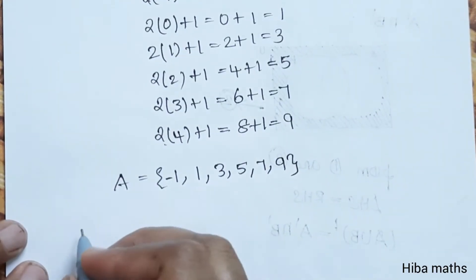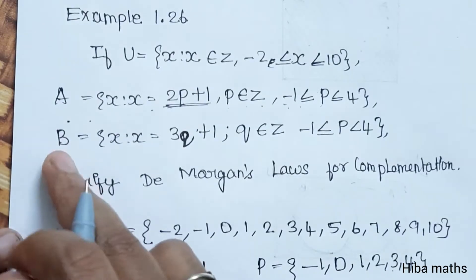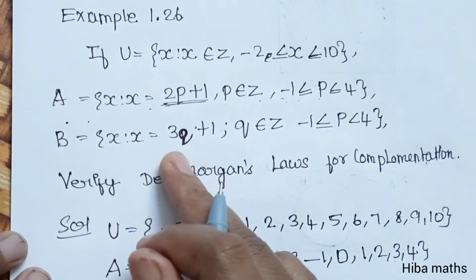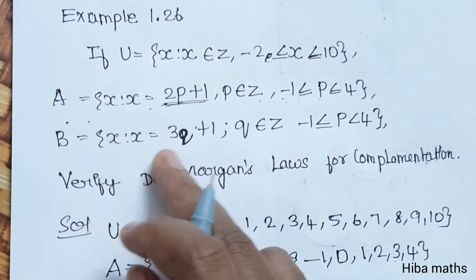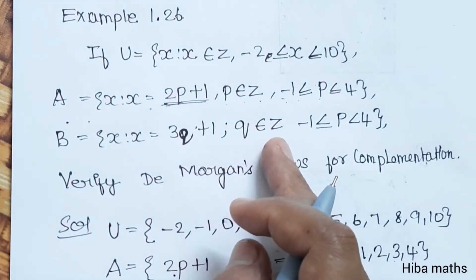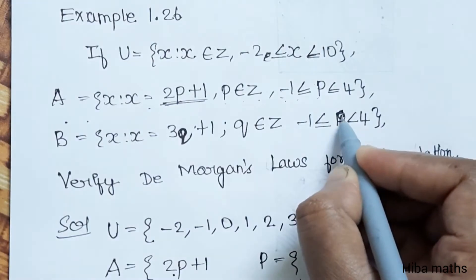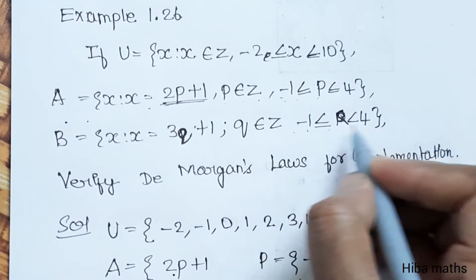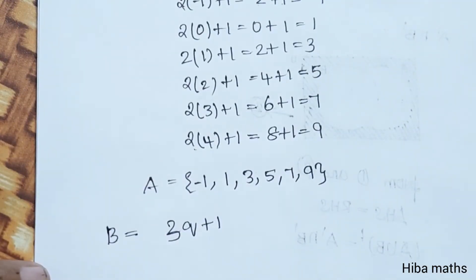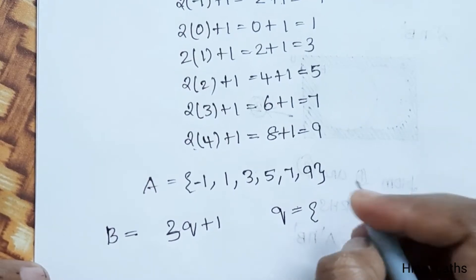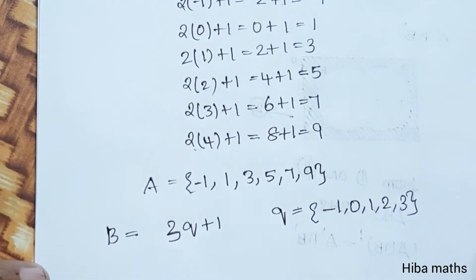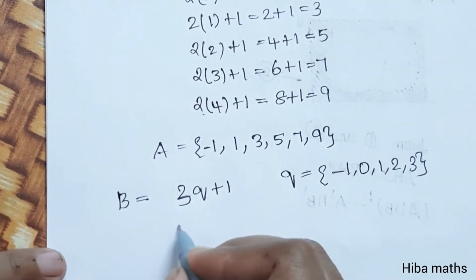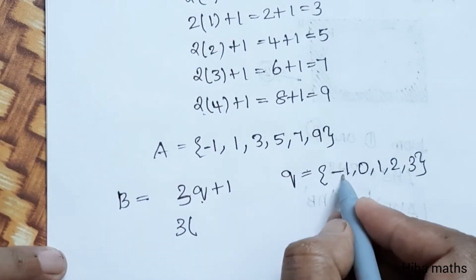This value is B. B is equal to {x such that x equals 3Q plus 1}, where Q is also an element of Z and Q is greater than or equal to minus 1 and less than or equal to 2. B equals 3Q plus 1, where Q = -1, 0, 1, 2, 3.